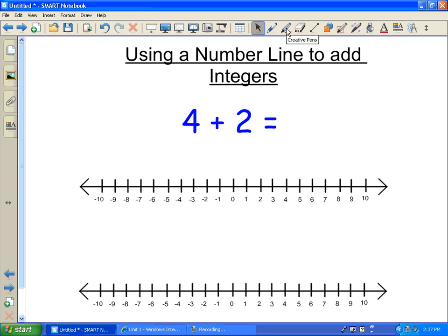The easiest way to use a number line to add integers is to look at the first number that you're given. In this case, the number is 4 plus 2, so the first number we're given is 4. Now it doesn't say plus in front of it, but any number that doesn't have a symbol in front of it is a plus.